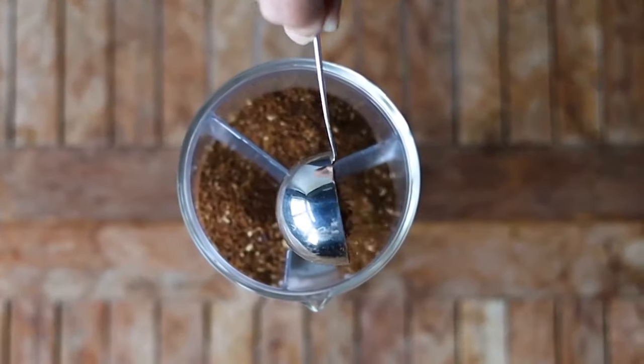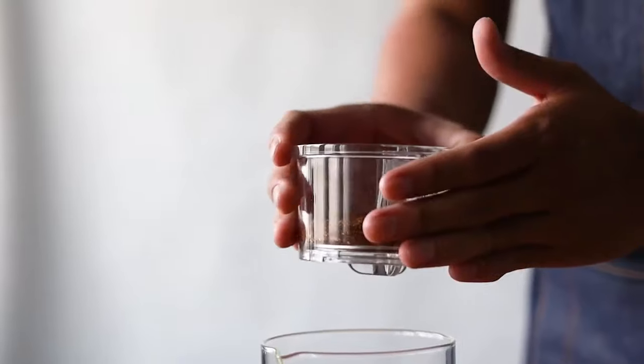To get started, add 45 grams of ground coffee, ensure it is level and pre-soak it with water.